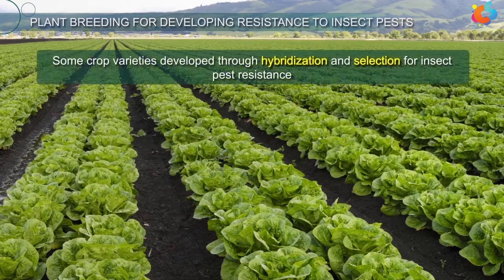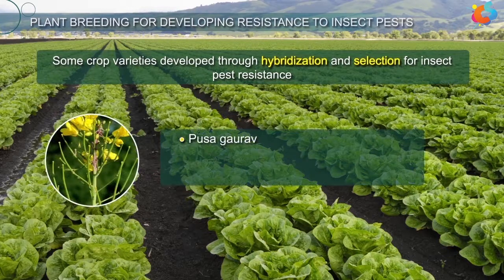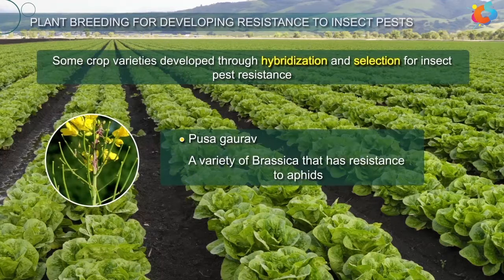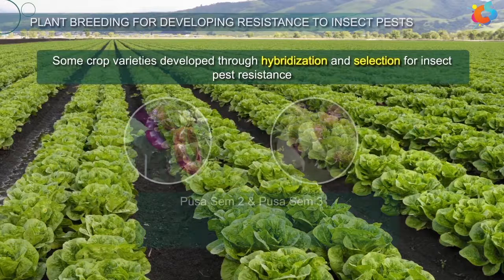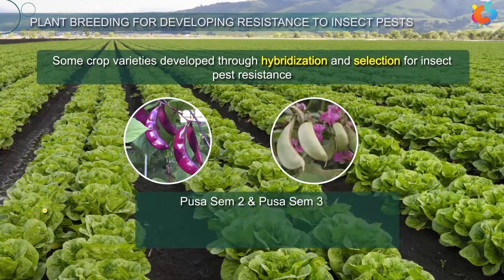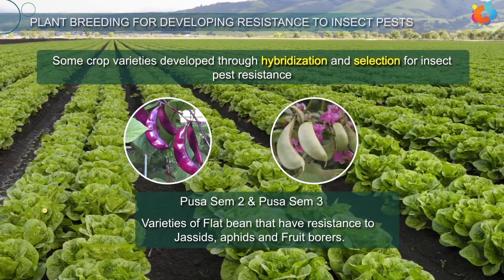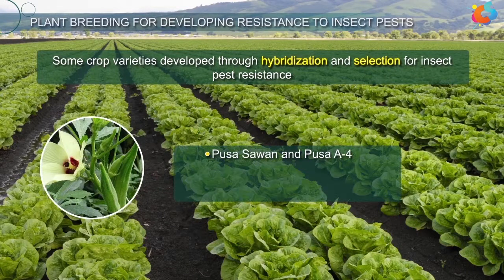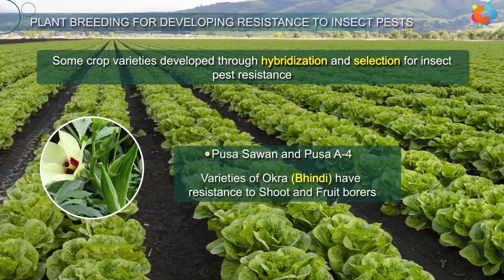Some crop varieties developed through hybridization and selection for insect-pest resistance are: Pusa Gaurav, a variety of brassica that has resistance to aphids; Pusa Sem 2 and Pusa Sem 3, varieties of flat bean that have resistance to jassids, aphids, and fruit borers; and Pusa Sawani and Pusa A4, varieties of okra (bheendi), which have resistance to shoot and fruit borers.